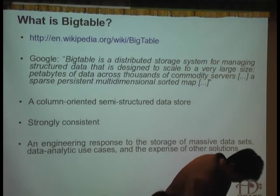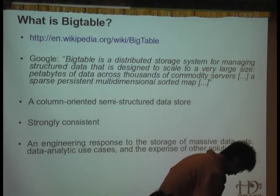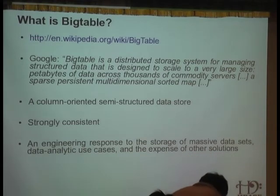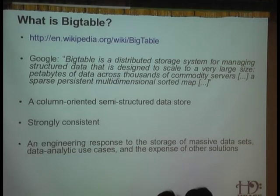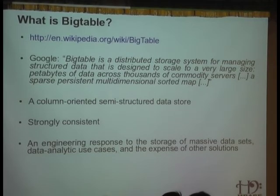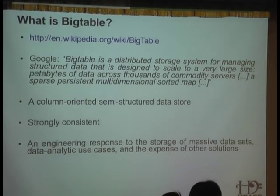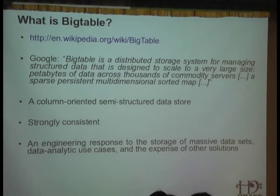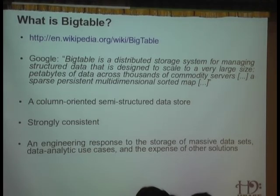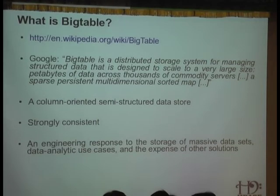This is a big deal. The way Google describes it: BigTable is a distributed storage system for managing structured data that is designed to scale to a very large size — petabytes of data across thousands of commodity servers. Its data type is specifically a sparse, persistent, multi-dimensional map. The way I like to describe it is a column-oriented, semi-structured data store which is strongly consistent. It's an engineering response to the storage of massive data sets, data analytics use cases, and the expense of commercial solutions for the same.